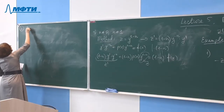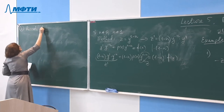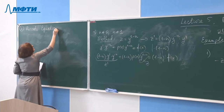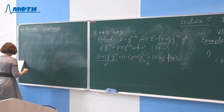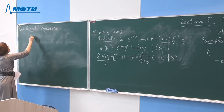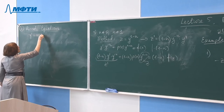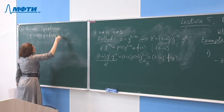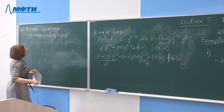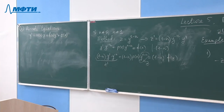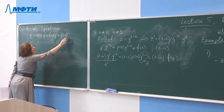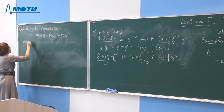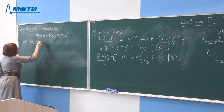Riccati equations have the form: Y-prime equals A(x)·Y plus B(x)·Y² plus C(x), where A(x), B(x), and C(x) are continuous functions.